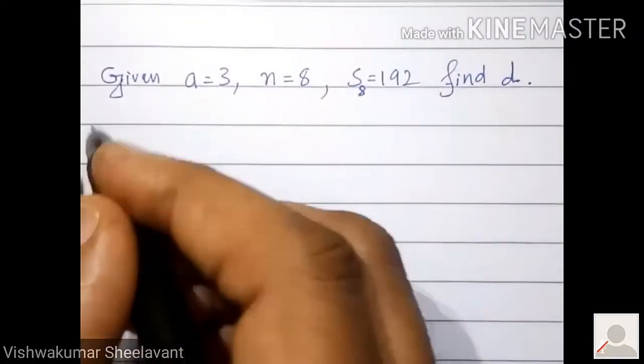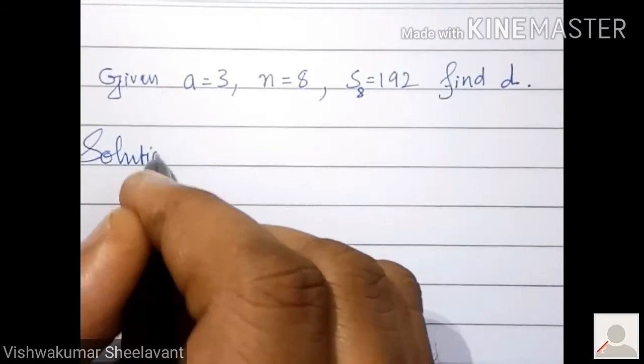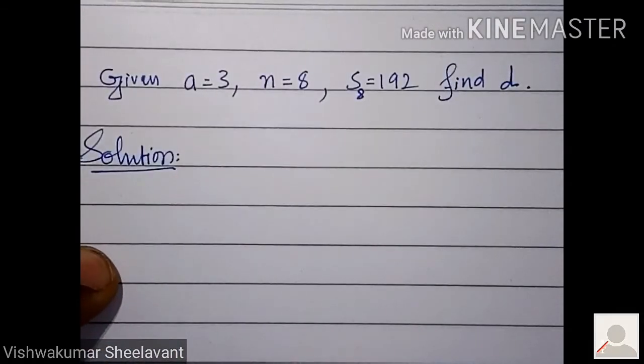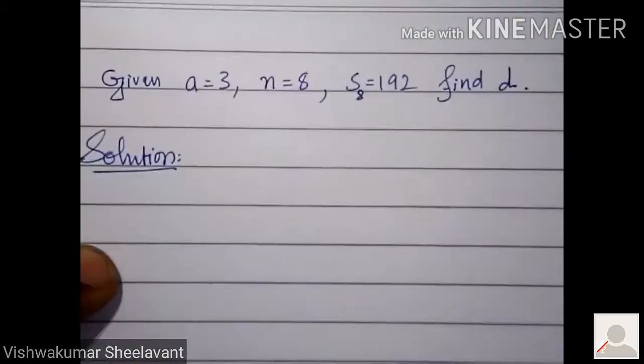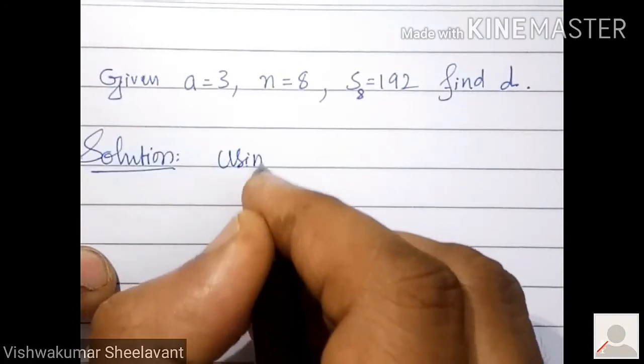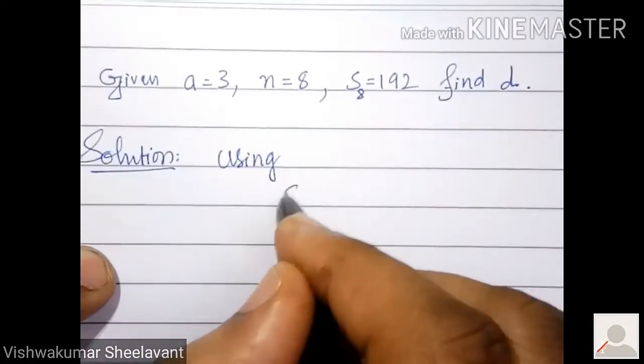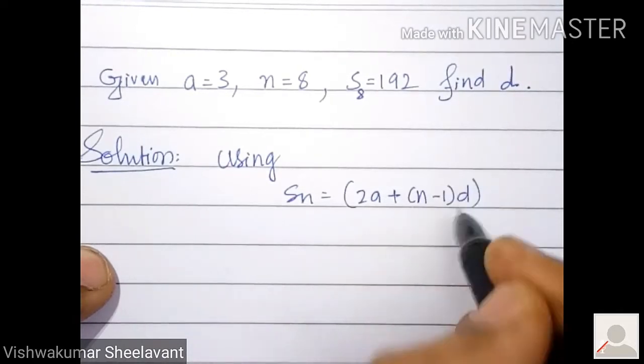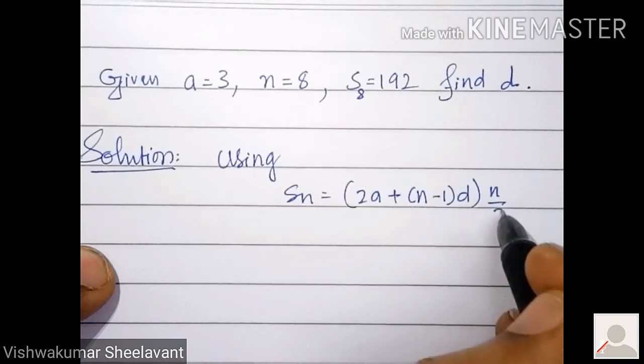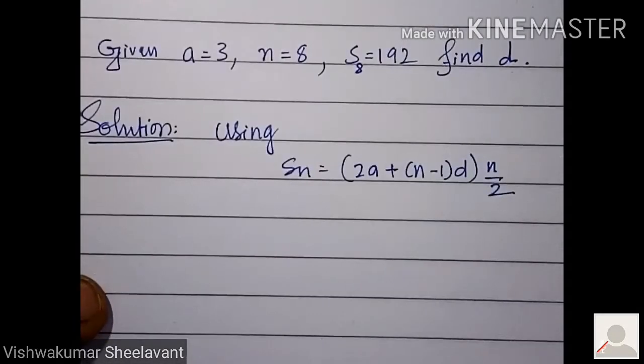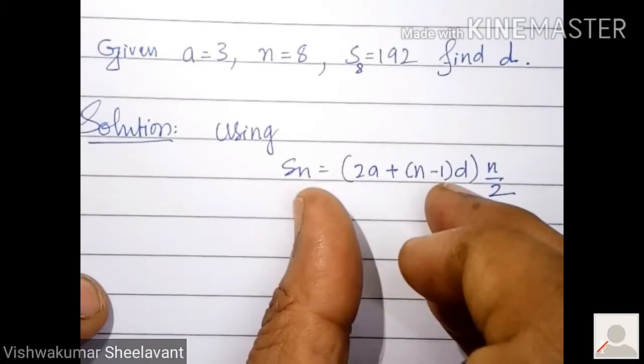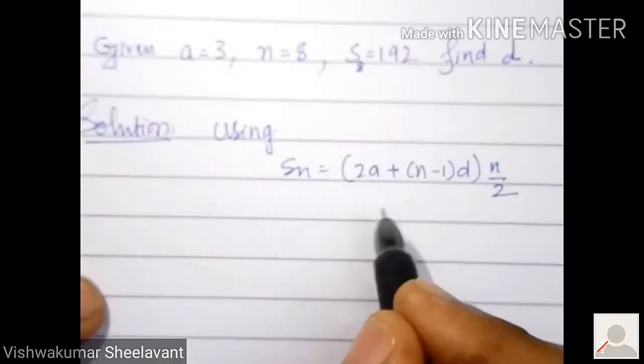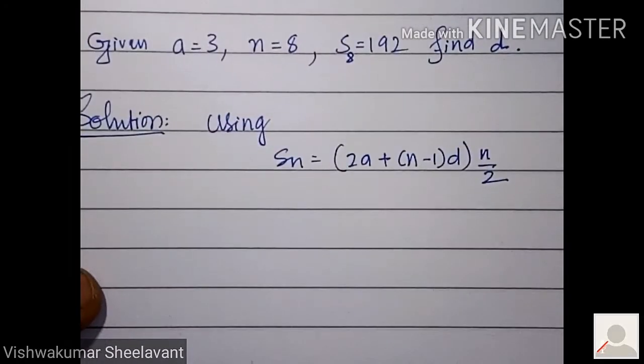Solution. This one is very direct problem now. Using S_n equals 2a plus n minus 1 into d, into n by 2. This n by 2 is multiplied with this bracket. You can write it in the beginning or at the end, anywhere you can write it, because multiplication is commutative. A into B is equal to B into A.